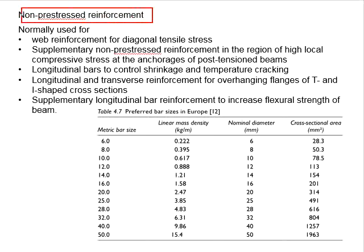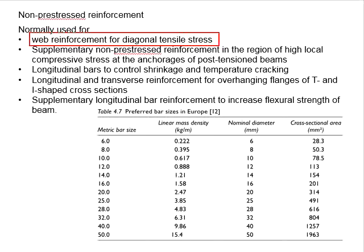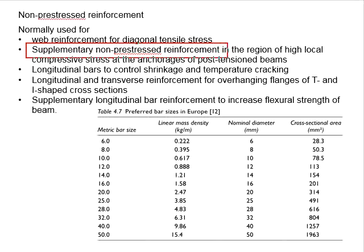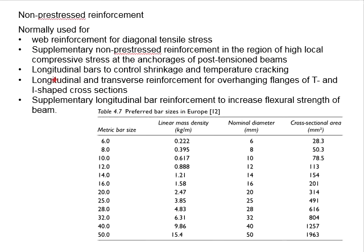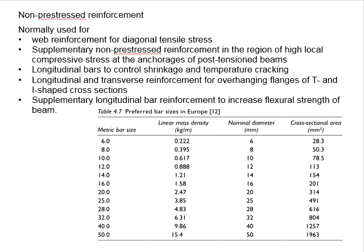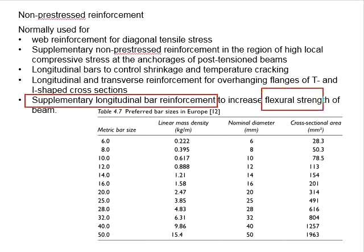In pre-stressed concrete members, non-pre-stress reinforcement bars are used as shear reinforcement for diagonal tensile stress, as supplementary reinforcement in regions of high compressive stress at the anchorage of post-tension beams, as longitudinal bars to control shrinkage and thermal cracking, and as longitudinal and transverse reinforcement for overhanging flanks of T and I-shaped cross-sections.